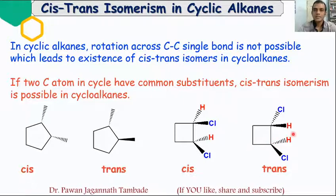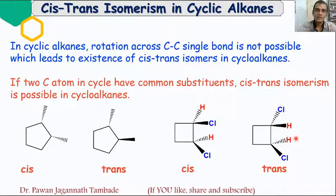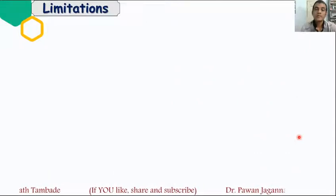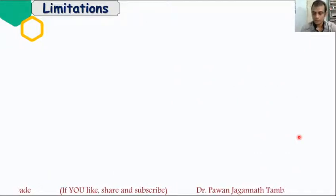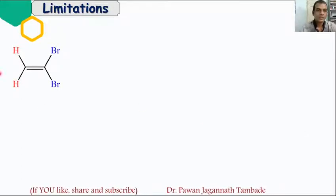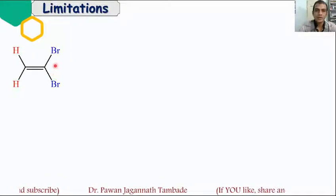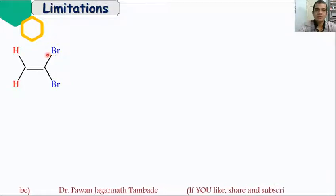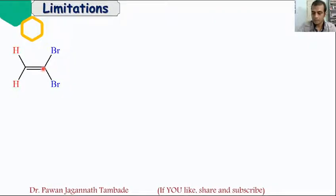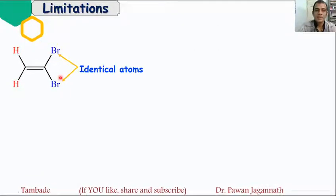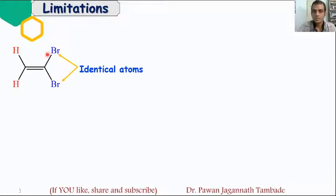These are the different possibilities in alkenes, cycloalkenes, and cycloalkanes. Now we will see certain limitations of cis-trans isomerism. If on one carbon atom two identical atoms are present, we cannot label the molecule as either cis or trans. If identical atoms or groups are present on the same carbon atom, such molecules do not show cis-trans isomerism.